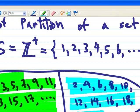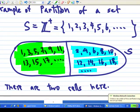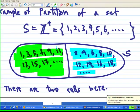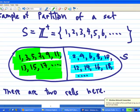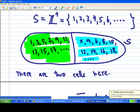So in this case, these two subsets are disjoint. And if you pick any one number, you will find that the number will either be inside the green part or inside the blue part. These are called cells. So there are two cells in this partition.